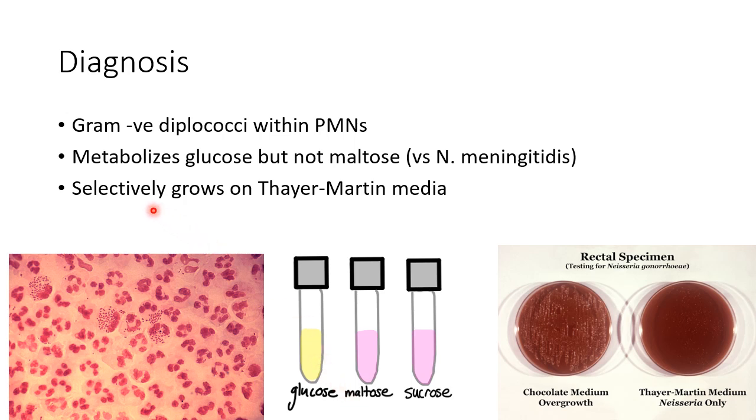Neisseria gonorrhea selectively grows on Thayer-Martin media. As you can see in this picture, in Thayer-Martin media only Neisseria grows.